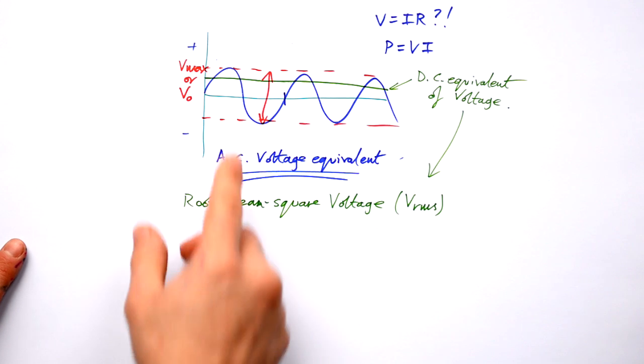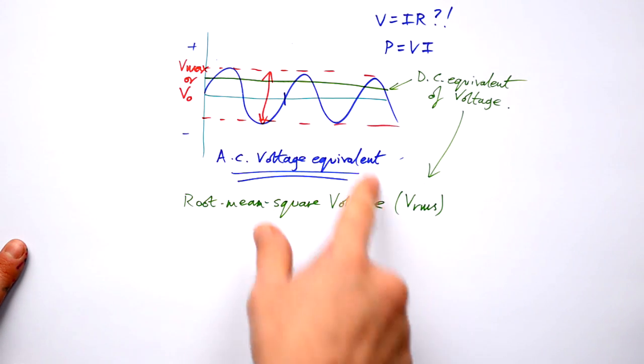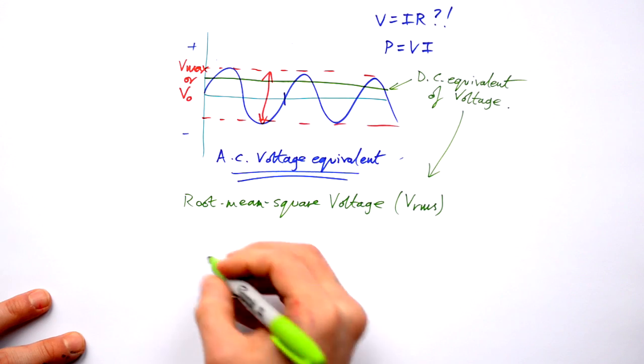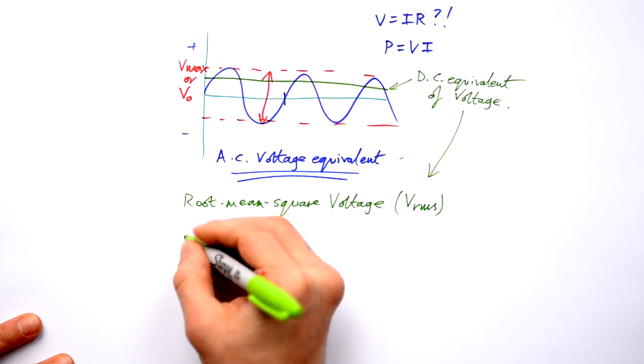And the same thing goes for the current as well, because the current is going to be at a max and then a min and a max. We need to find out the RMS current as well. How do we do that? It's as simple as this.